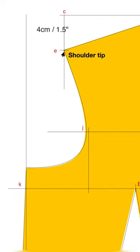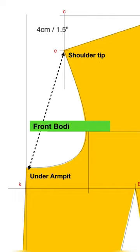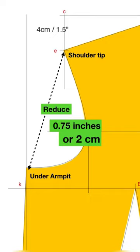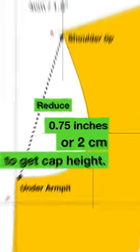The second method is to calculate it from your basic bodice pattern. Measure straight from shoulder tip to under armpit position on the front bodice armhole, then reduce around 0.75 to 2 cm from that measurement. You will get your cap height.